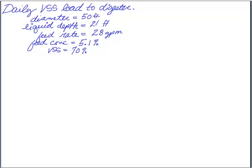In this problem we're going to try to figure out the volatile suspended solids loading to an anaerobic digester. So they've given us some information about the digester, the diameter and the liquid depth, and they've also given us some information about the feed.